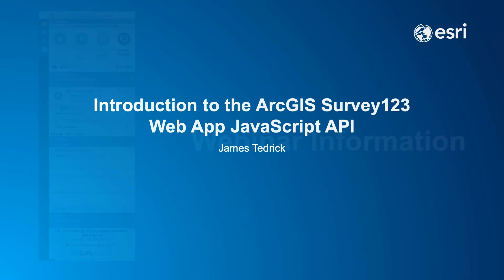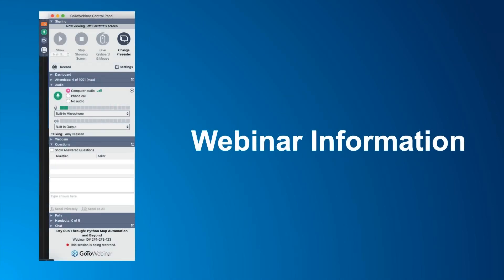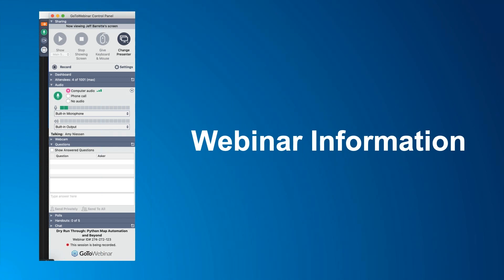Before we get started, I'd like to go over a few items so you know how to participate in today's event. We've taken a screenshot of an example of the attendee interface — you should see something like this on your own computer desktop in the upper right corner. You're listening in using your computer speaker system by default, but if you prefer to join over the phone, just select Use Telephone in the audio pane. You will have the opportunity to submit text questions by typing into the Questions pane of the control panel at any time during the presentation.